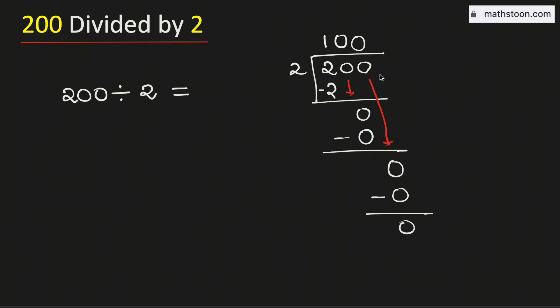As we have obtained the number 0 and there is no number to bring down here, so we will stop. Therefore, 200 divided by 2 is equal to 100, and this is our final answer.